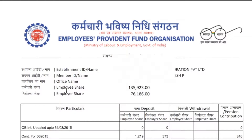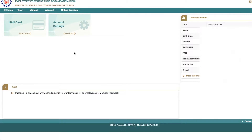Here we have the employee share, and then we will get our company details. If you work in multiple companies, we will get a list of multiple company details. Scroll and see — every month we will get the company contribution, and every quarter we will get the amount of the PF account and the PF balance.